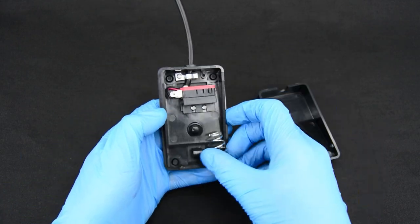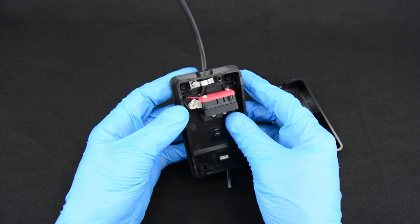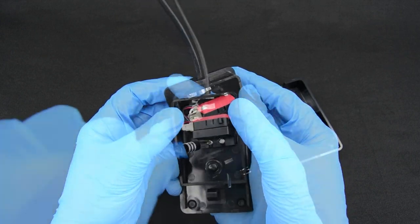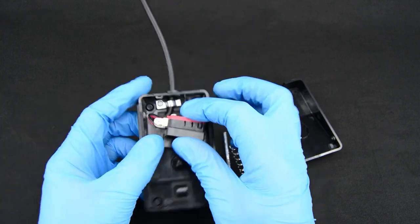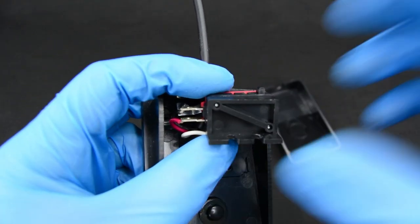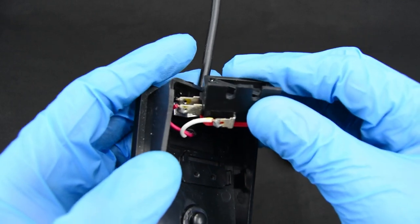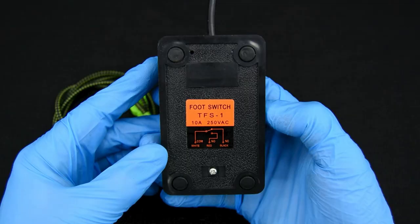Inside the footswitch you have a spring and push switch. There are 3 wires coming out of the switch. If you noticed the orange sticker, white is common wire, red is normally open and black is normally closed.